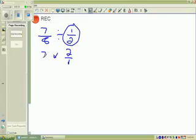Now you can multiply 7 eighths times 2 over 1. 8 times 1 is 8, and 7 times 2 is 14.